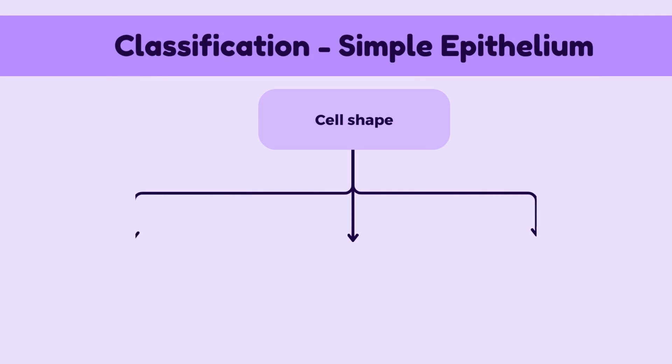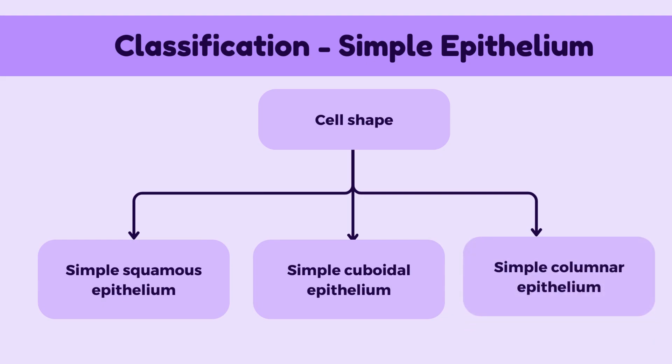Based on the shape of the cells, they can be classified as simple squamous epithelium, simple cuboidal epithelium, and simple columnar epithelium.